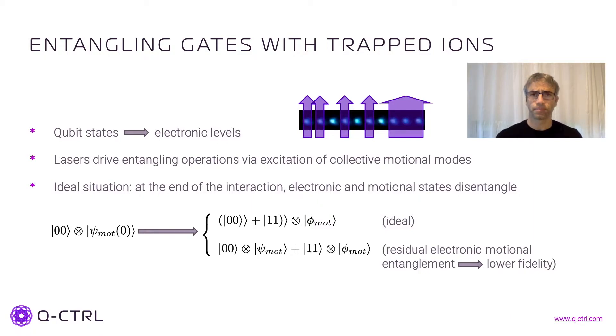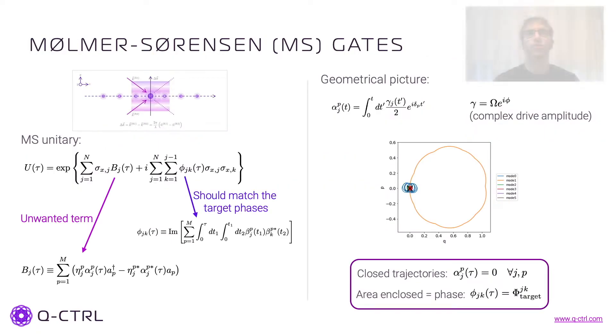So let me talk about a gate that's commonly used in ion trap labs around the world, the Mølmer-Sørensen gate where we have this bichromatic drive on the ions. For those more mathematically inclined, we have the description in terms of equations. So we have a unitary and the term on the right has the Pauli operators here for ions j and k. So this is exactly the interaction term that we are interested in.